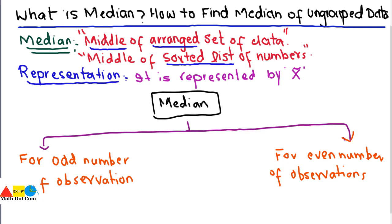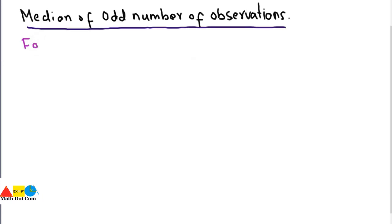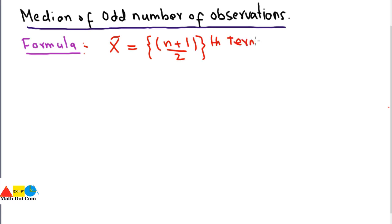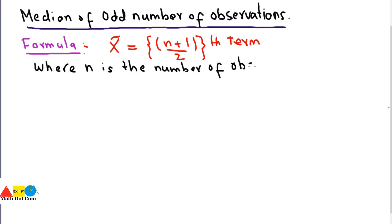For odd number of observations, the formula for finding the median is: x̃ = (n+1)/2 th term, which gives the central term of the given data. Here n is the number of observations. That central term is the median of the given set.